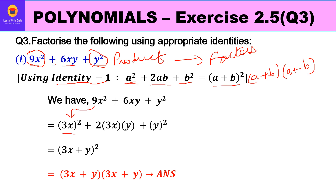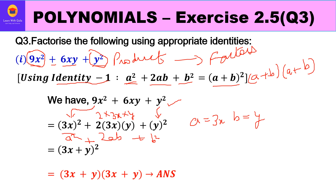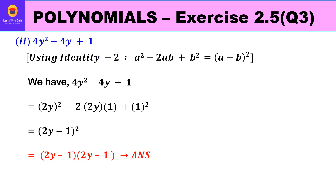Now 9x² can be written as (3x)², y² can be written as y², and in between we have 2 × 3x × y, which is 2ab. So a = 3x and b = y. The identity says the factors are (a + b)², so isn't it (3x + y)²? That means the factors are (3x + y)(3x + y).